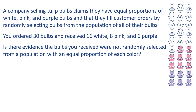A company selling tulip bulbs claims they have equal proportions of white, pink, and purple bulbs, and that they fill customer orders by randomly selecting bulbs from the population of all of their bulbs. You ordered 30 bulbs and received 16 white, 8 pink, and 6 purple. Is there evidence the bulbs you received were not randomly selected from a population with an equal proportion of each color?